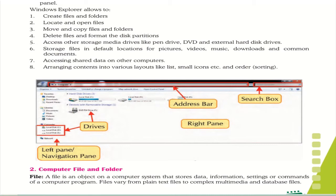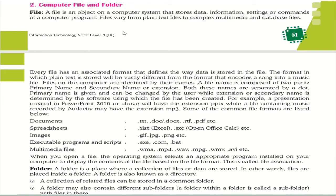A file is an object of a computer system that stores data, information, settings, or commands. Different file types have extensions — for documents: .txt, .doc, .rtf, .pdf; for spreadsheets: .xls; for open office calculations: .sxc; for images: .gif, .jpg, .png; for executable files: .exe, .com. A folder is a location where files or data are stored; you can store a number of files in a folder.